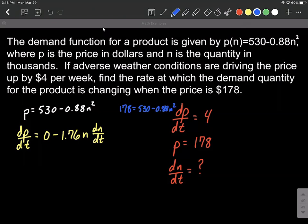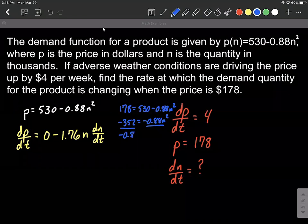We're going to get a price point of 178 equals 530 minus 0.88 N squared. And we're going to have to solve this down for N. First, I'm going to subtract the 530 from both sides, giving us negative 352 equals negative 0.88 N to the second power. We'll make this into a power equation by dividing both sides by negative 0.88. That'll get us the N squared on one side all by itself. And I got 400 on the other side.